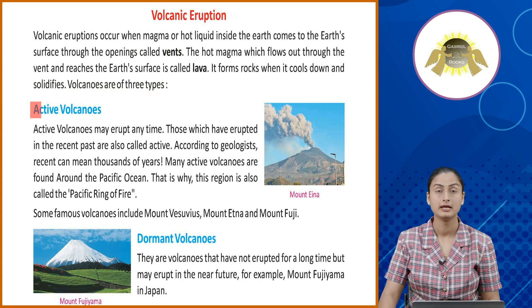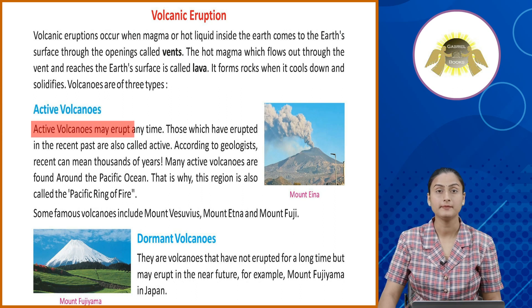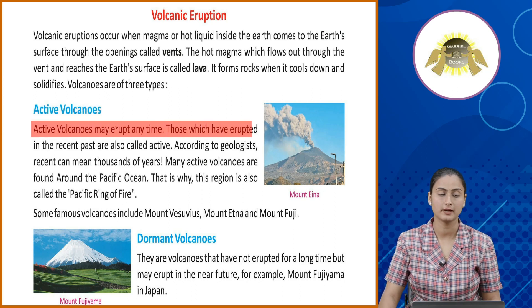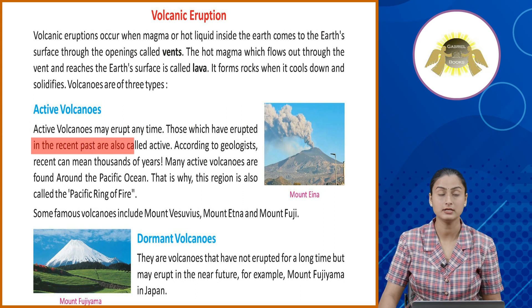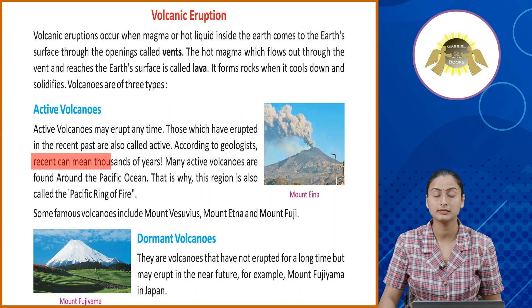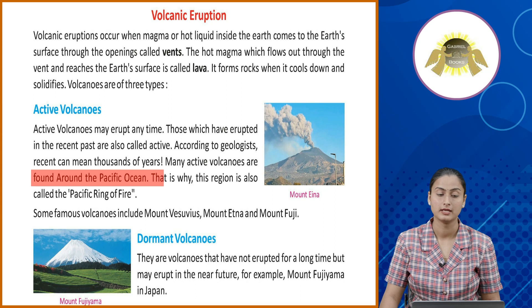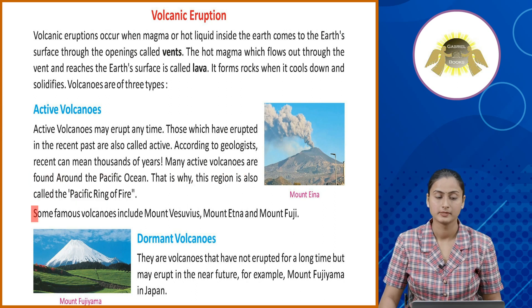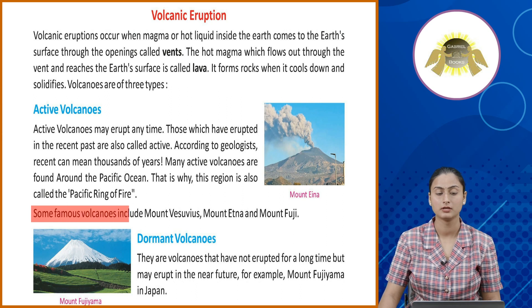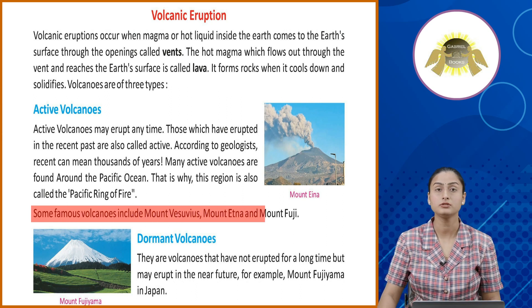Active volcanoes may erupt anytime. Those which have erupted in the recent past are also called active. According to geologists, recent can mean thousands of years. Many active volcanoes are found around the Pacific Ocean. That is why this region is called the Pacific Ring of Fire. Some famous volcanoes include Mount Vesuvius, Mount Aetna and Mount Fuji.